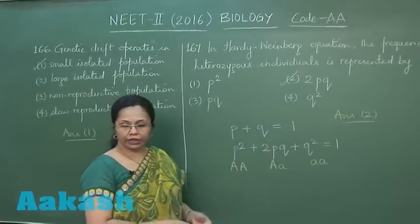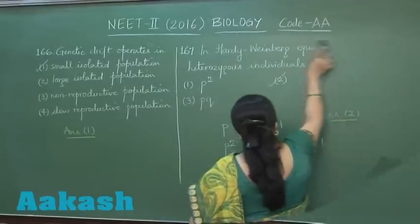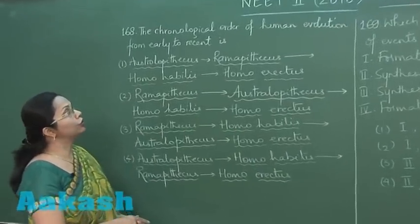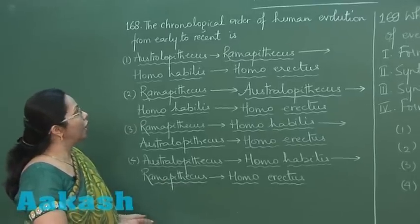So we can move on to the next question, 168. Now in this question 168, we have to select the correct sequence of chronological order in the human evolution.